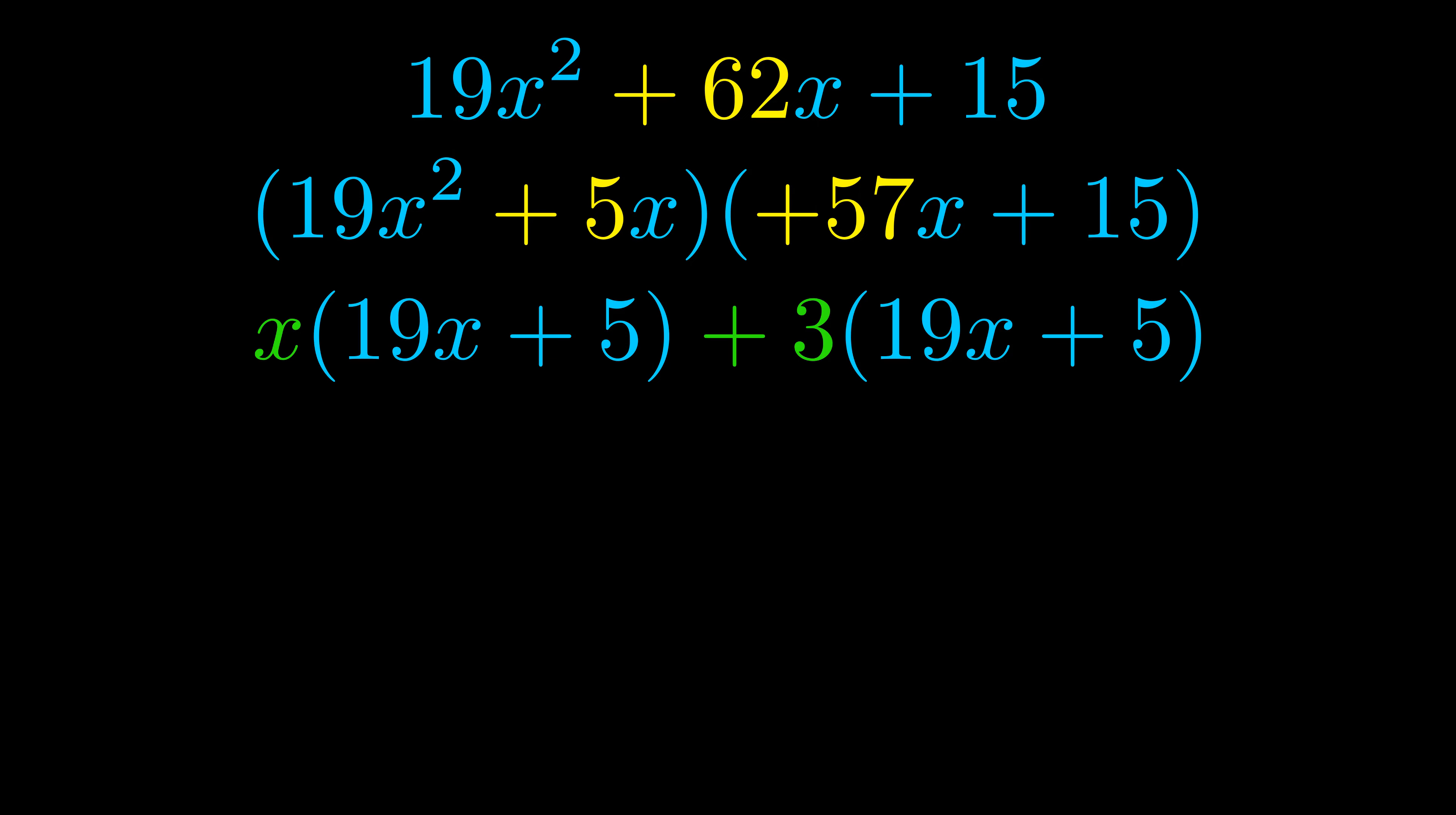Notice also how what remains inside of the parentheses is the same in both cases. The blue values are the same. Those blue values will become one of our factors and we will combine the two green values, the GCFs that we pulled out, to get the other one. And that is our fully factored equation.